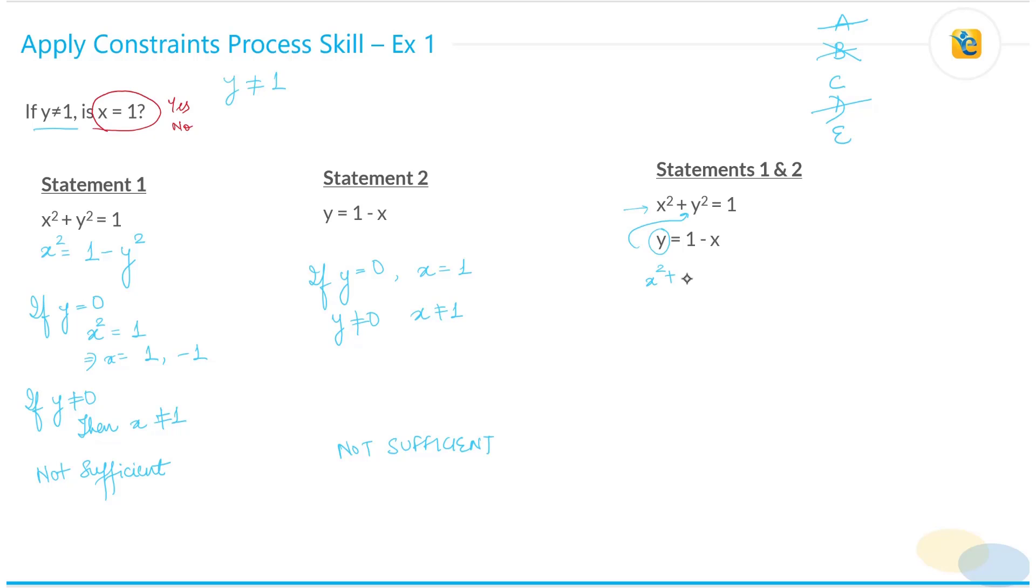So what do we get? x square plus 1 minus x square is equal to 1. Let's solve this further. Let's open up the square here: plus 1 minus 2x is equal to 1. What do we get? We get 2x square minus 2x is equal to 0. Let's take 2x common: x minus 1 is equal to 0. So here we get x is equal to 0 or x is equal to 1, which again means that we have two possible values. So these two statements together are also not sufficient, which means that the correct answer here is choice E.